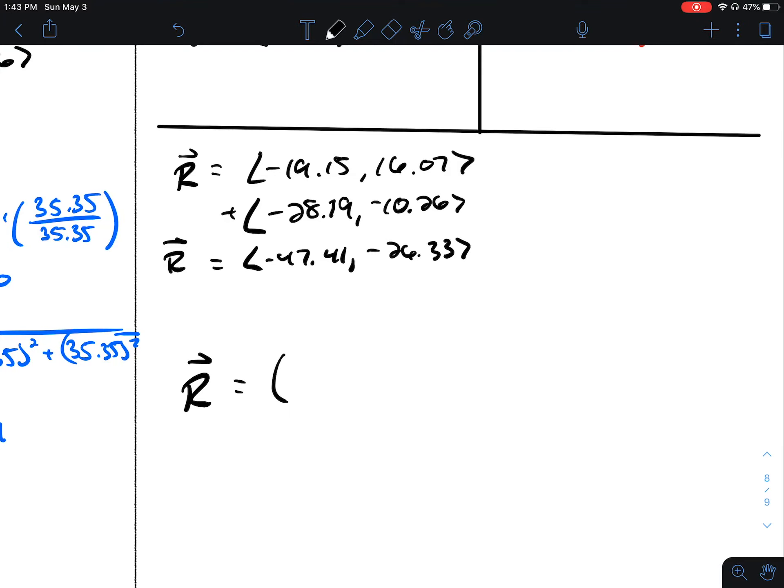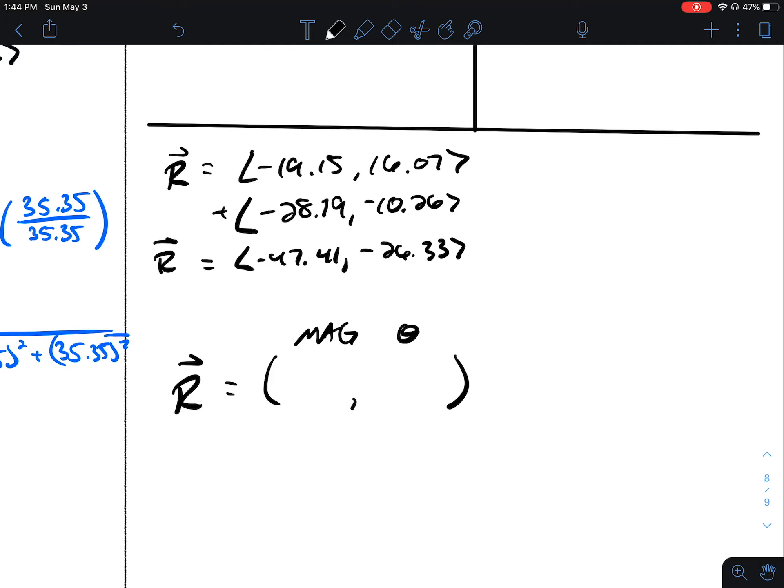To get this in polar form, we have the magnitude followed by the angle. So if I check out what this would look like in a coordinate plane, it's going to be in quadrant three because we're going left 47.41 and down 26.33.